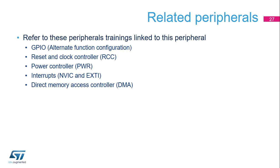This is a list of peripherals related to the USART. Please refer to these trainings for more information if needed: General Purpose Inputs/Outputs (GPIO), Reset and Clock Controller, Power Controller, Interrupts Controller, and Direct Memory Access Controller.